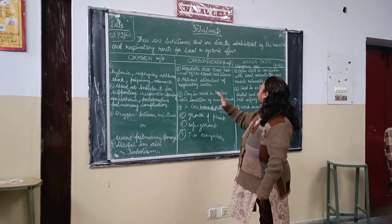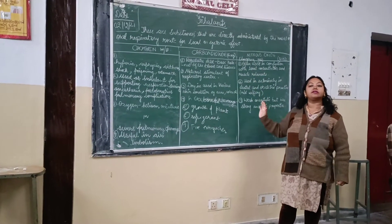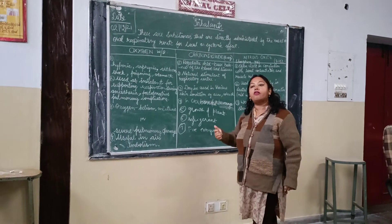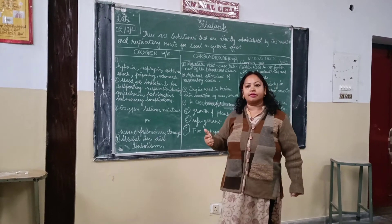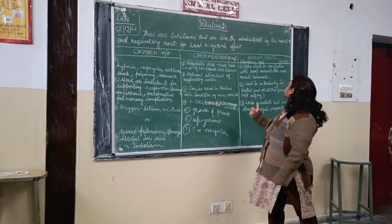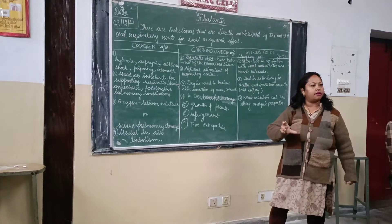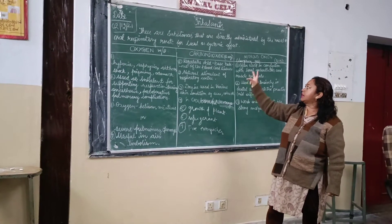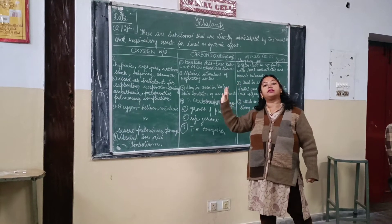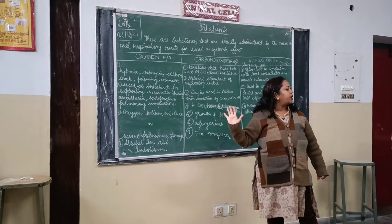It is written very boldly on the carbon dioxide cylinder that it contains carbon dioxide. Similarly, the third inhalant, nitrous oxide, which is also called laughing gas, is stored in a cylinder of blue colour. So these are the storage conditions of all three inhalants, which are very important to know.